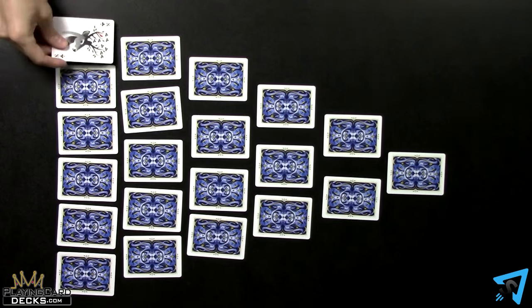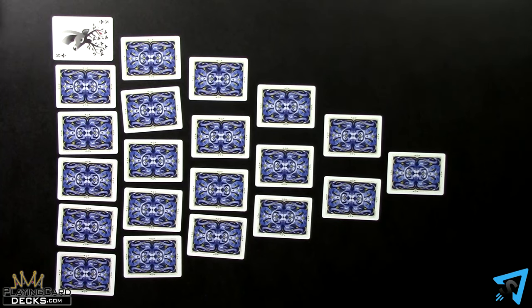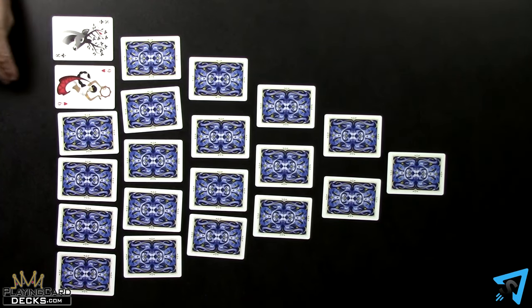A player that's not participating begins flipping over cards one by one, starting with the bottom row of the pyramid and going upwards.